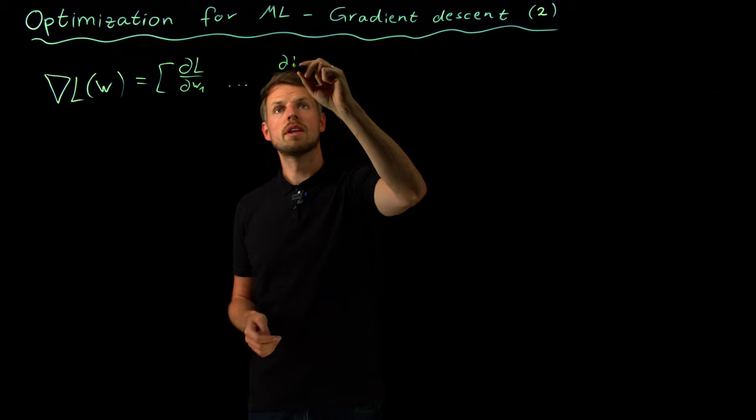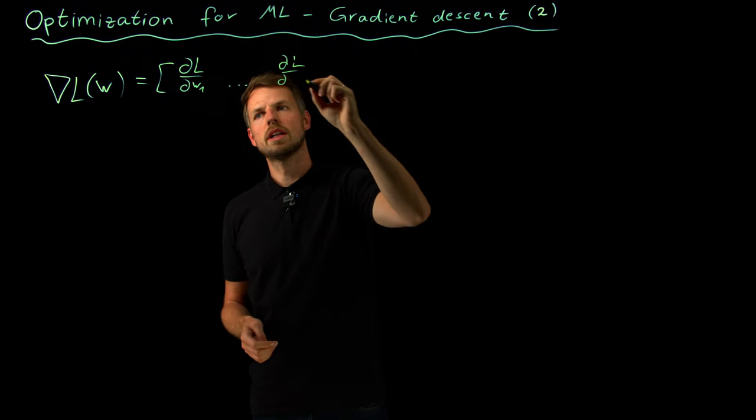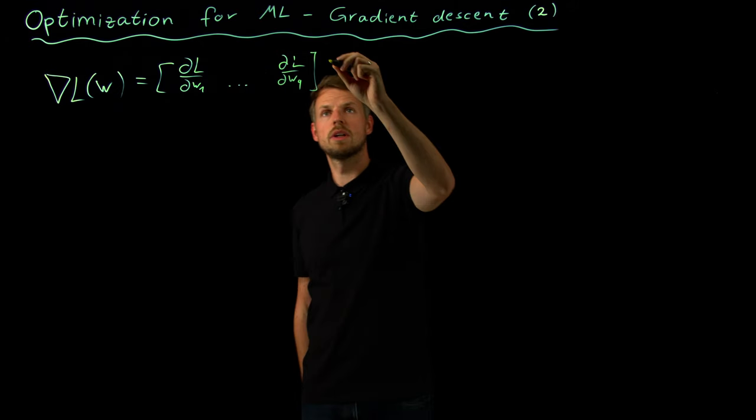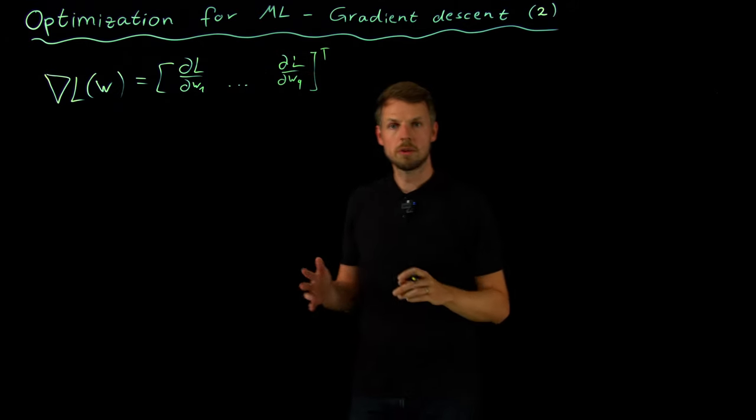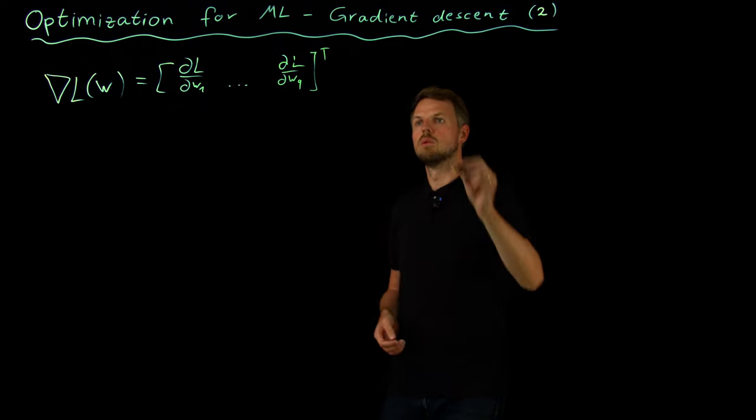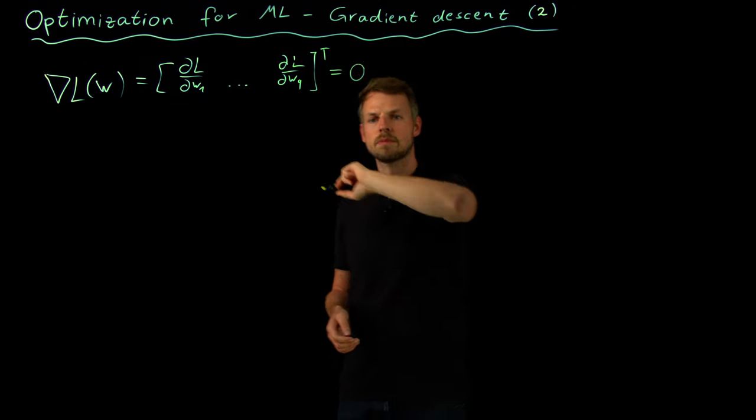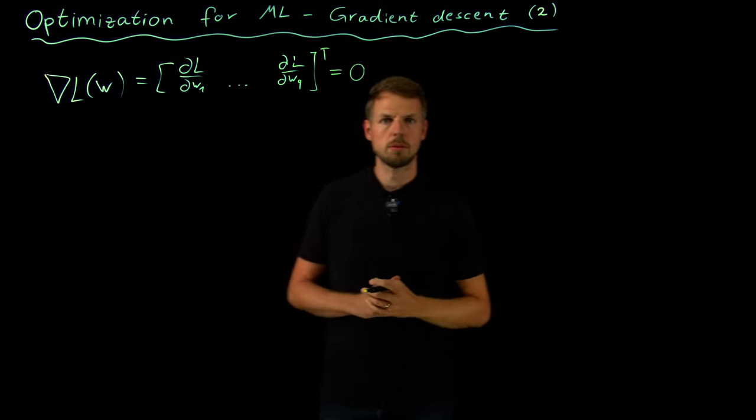Because knowing the gradient means that we can work with local information only. It has the disadvantage that we can only talk about local optimality, but we have seen that if we find points where this gradient is zero, then these satisfy the necessary condition for optimality.